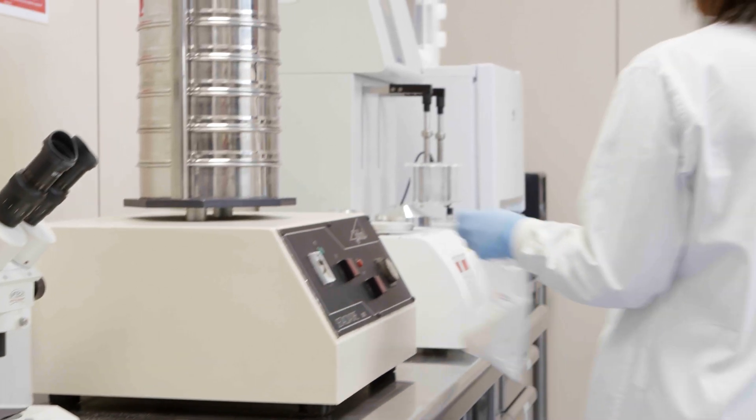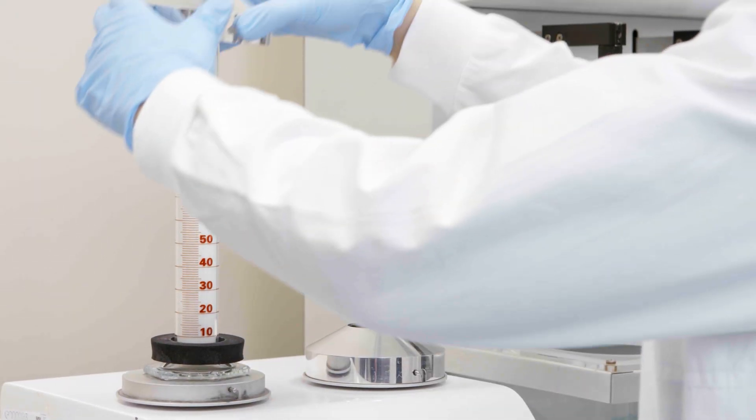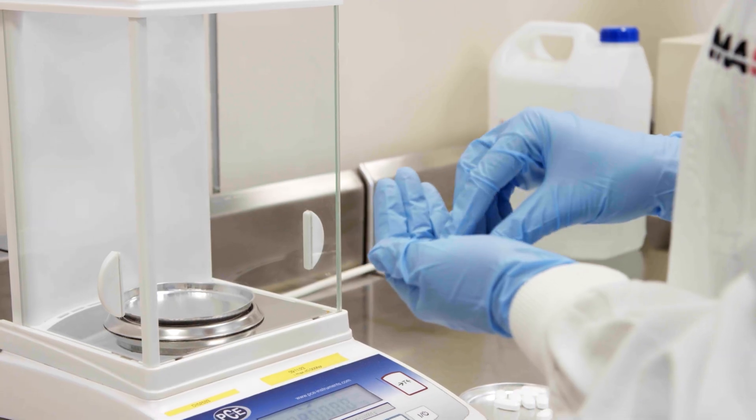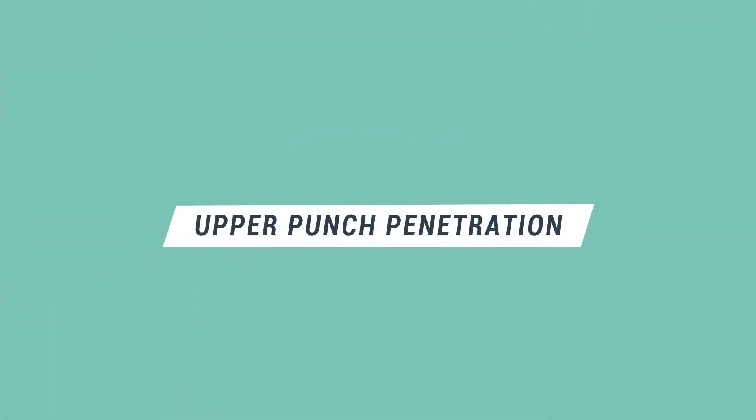And what if the weight and thickness are stable but the hardness varies? Have you ever tried adjusting the upper punch penetration? If the tablet is formed deeper in the die, for example at 5.5 millimeters due to the penetration of the upper punch, the force applied is spread equally between the upper and lower punches.